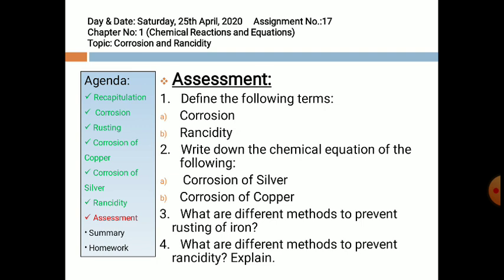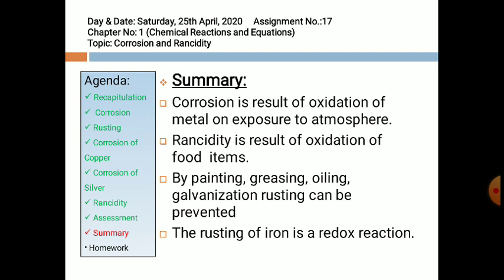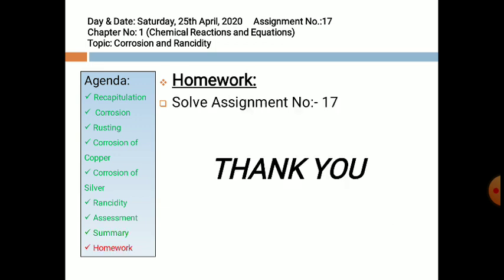I hope you are all able to answer these questions. Here is the summary of today's topic: Corrosion is the result of oxidation of metal on exposure to atmosphere. Rancidity is the result of oxidation of food items having fat and oil. By painting, greasing, oiling, or galvanization, rusting can be prevented. Rusting of iron is a redox reaction. Your homework is to solve assignment number 17. Thank you.